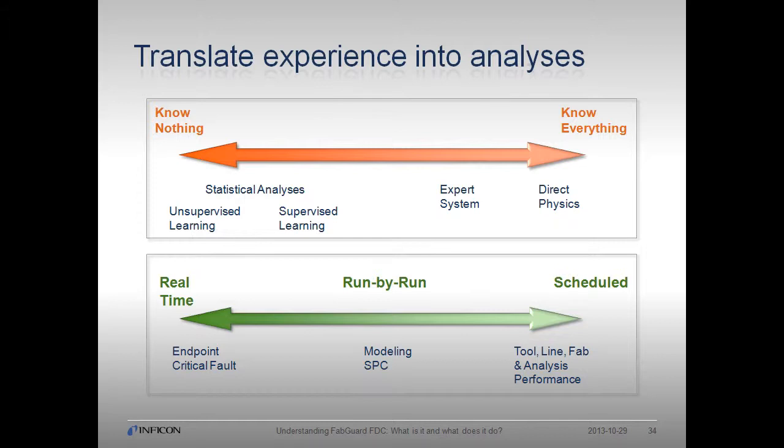Think of the expert system as a way to automate failure mode and effect analysis entries. For example, a wafer will be damaged by charging if there are too many interruptions during an implant process, and expert system rules can be put in place to notify the engineer and/or perform an action on the equipment. At the far end, where we know everything about the process — the direct physics — FabGuard can also be implemented using expert system rules and advanced modeling techniques. For example, implant analyzer magnet health can be accurately modeled using direct physics to indicate whether the calibration has shifted, resulting in the wrong species being implanted into product.